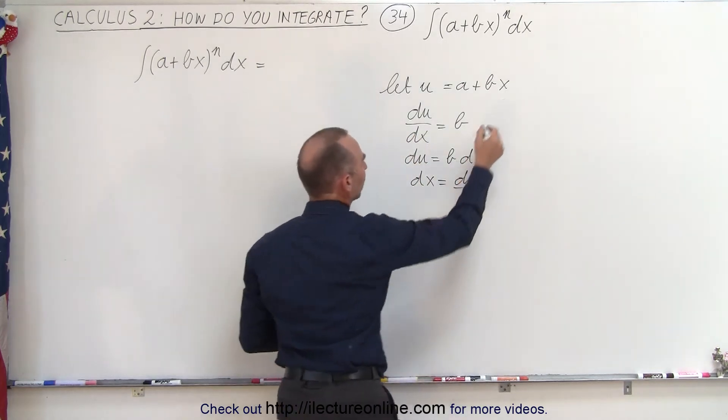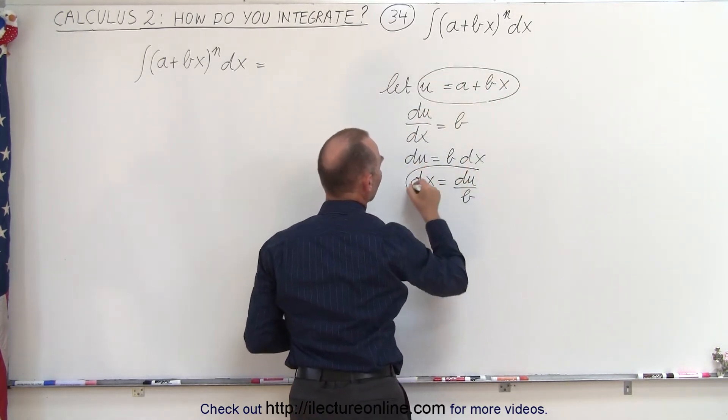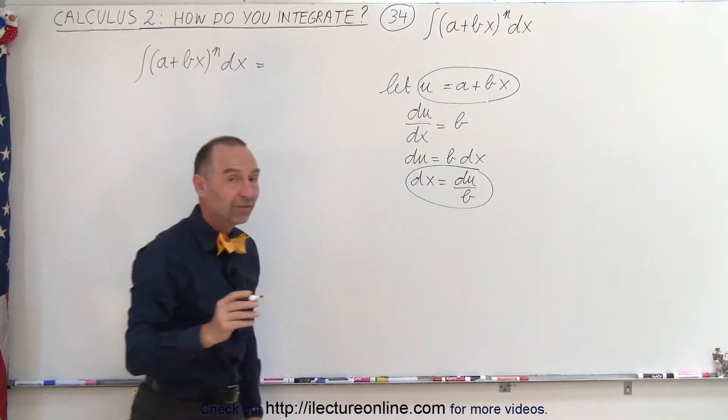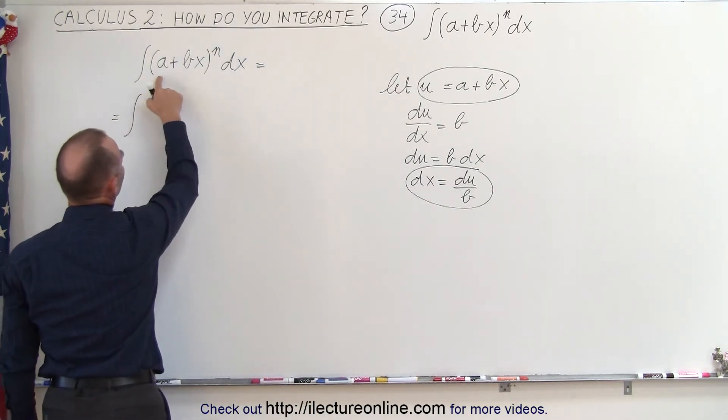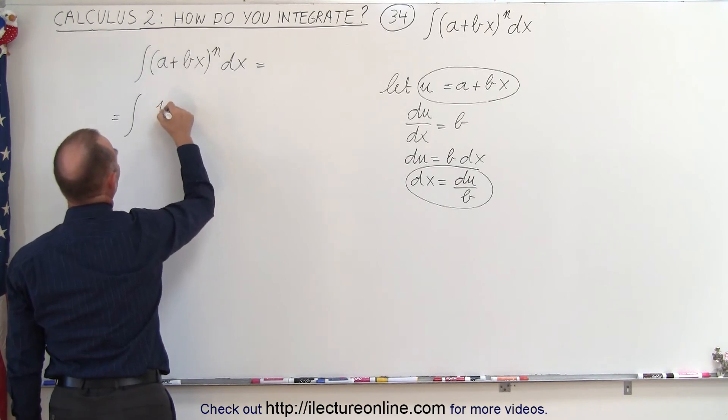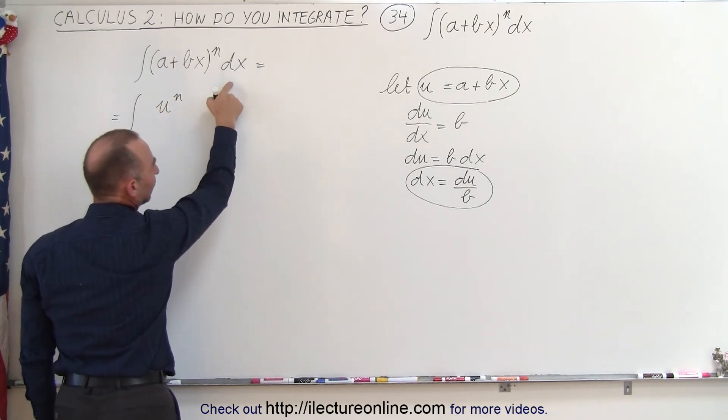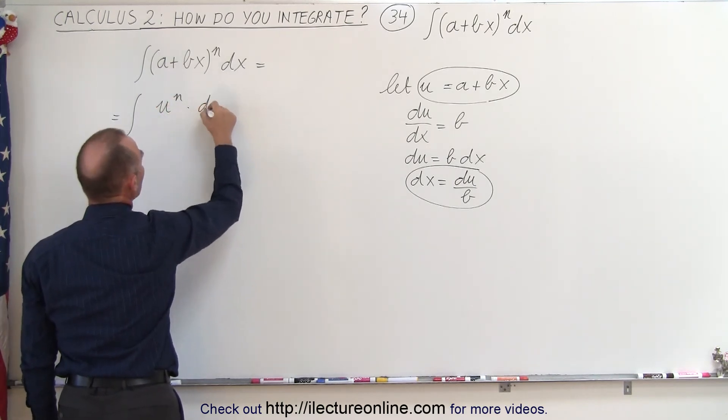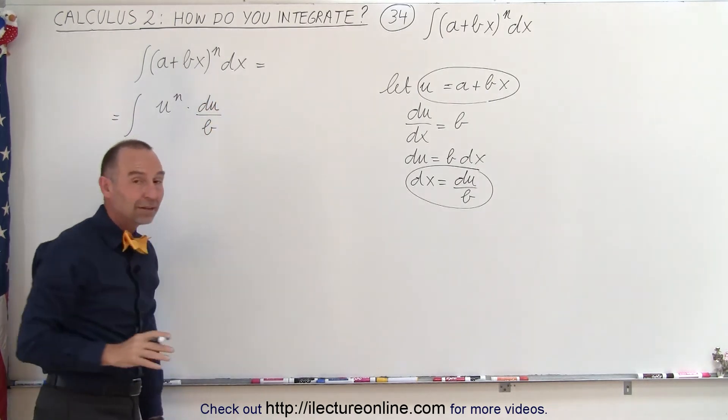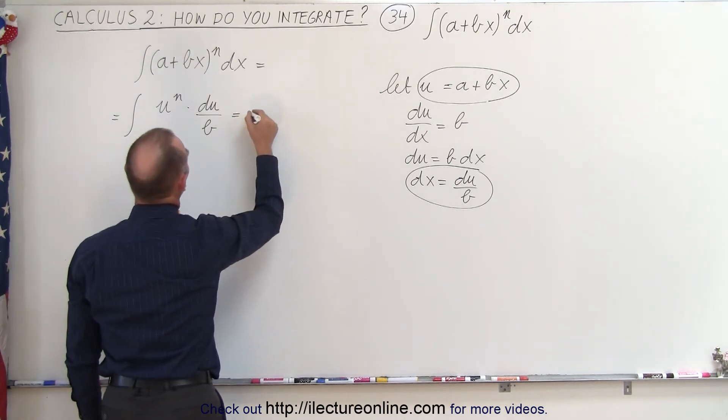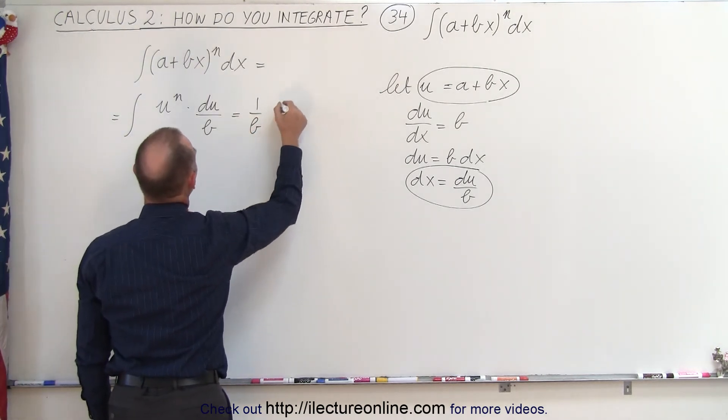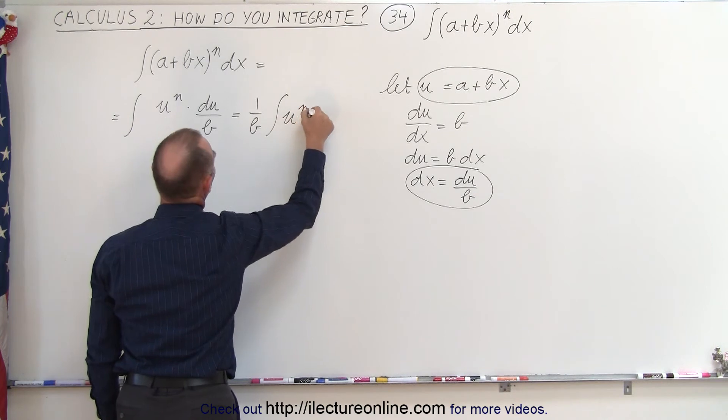So let's go ahead and substitute this inside our integral and see what we get. This becomes equal to the integral of u to the n power, and dx becomes du divided by b. Now since b is a constant, it can come outside the integral sign, so this is equal to 1 over b times the integral of u to the n du.